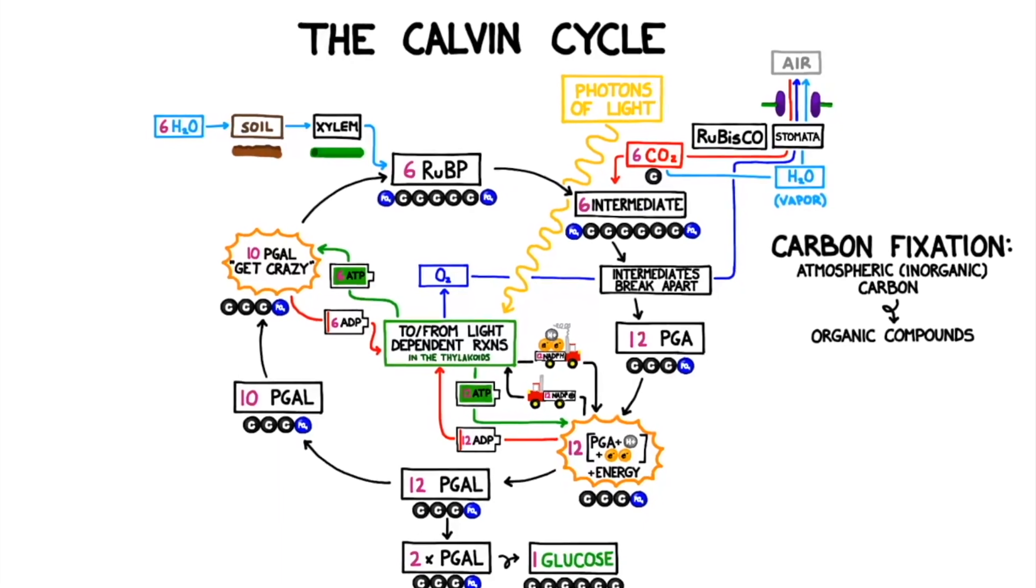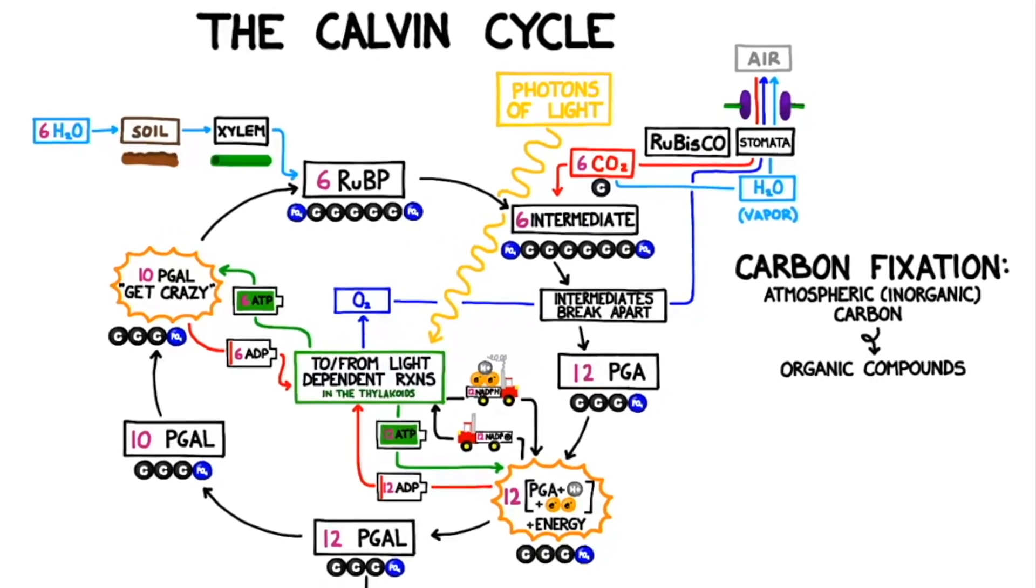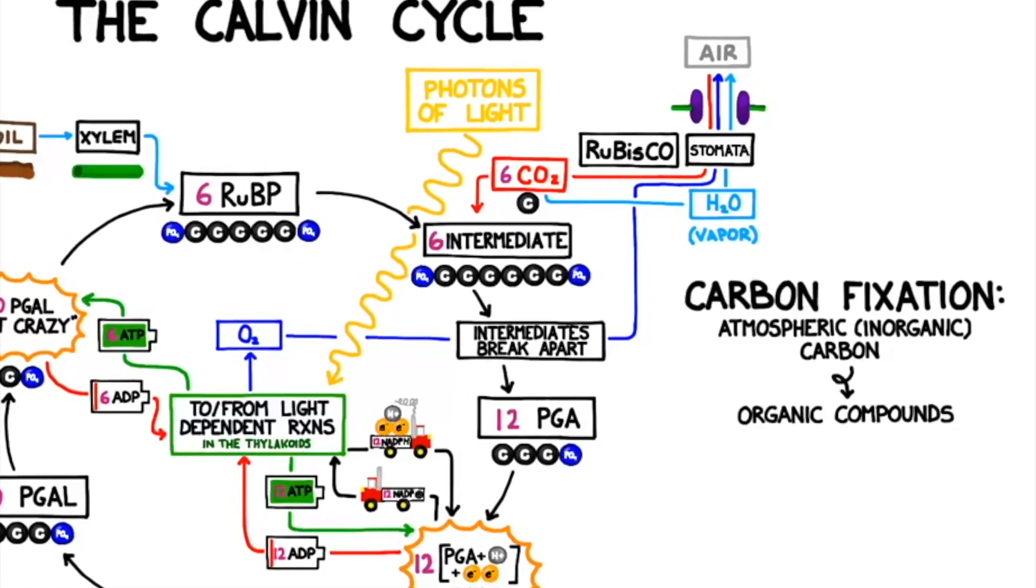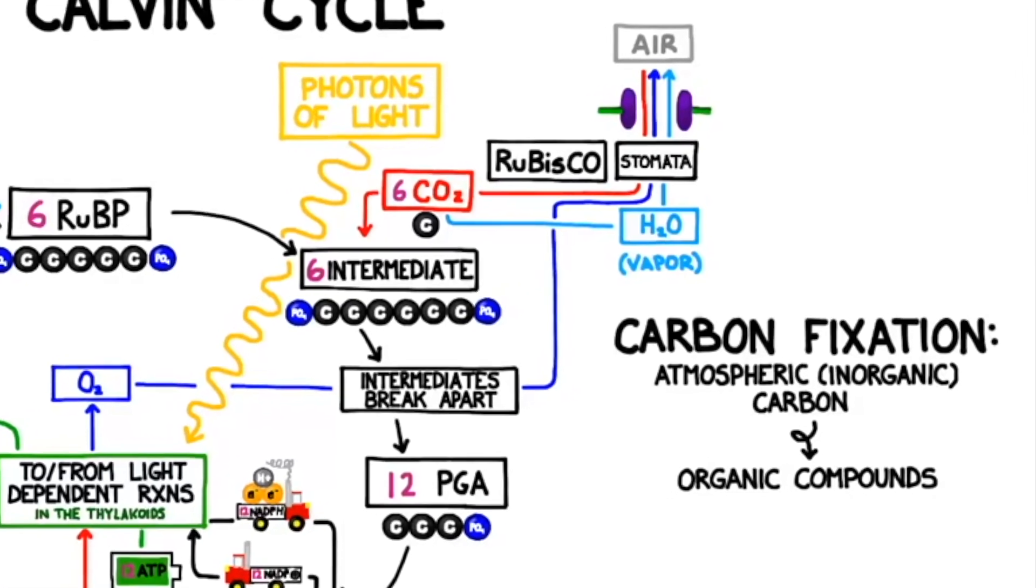During photosynthesis, they take atmospheric carbon from carbon dioxide and convert it into organic carbon contained within molecules like glucose.